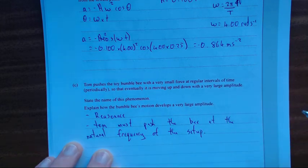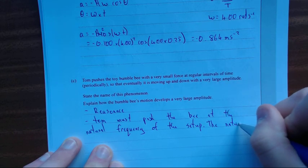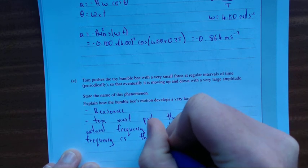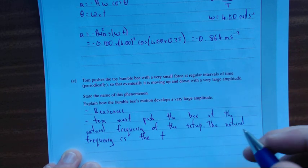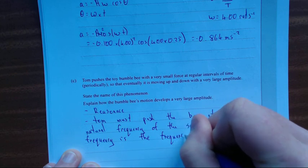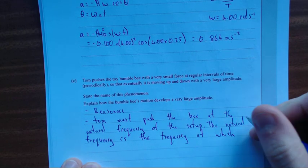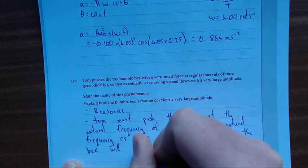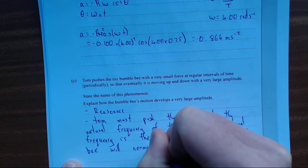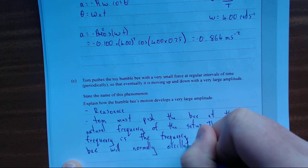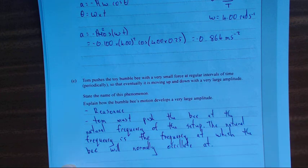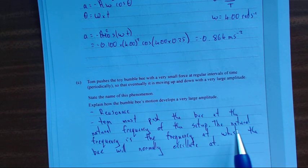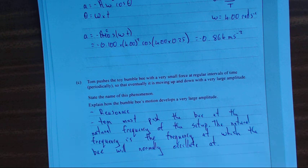Explain how the bumblebee's motion develops a very large amplitude. For starters, I've named it. Tom must - this is how he gets to it, how he's going to develop a very large amplitude - push the bee at the natural frequency of the setup.